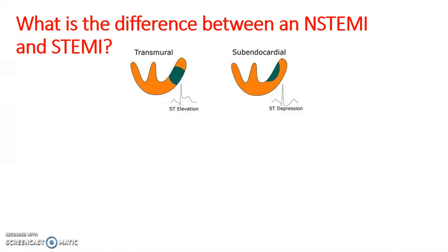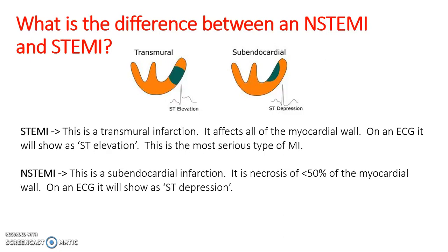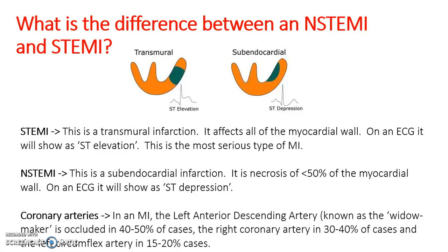What is the difference between an NSTEMI and a STEMI? A STEMI is a transmural infarction — all of the myocardial wall, as you can see on the left, is affected — and on an ECG it will show ST elevation. That is the most serious type of MI. An NSTEMI is a subendocardial infarction, meaning necrosis of less than 50% of the myocardial wall, and that will show as ST depression. The left anterior descending artery is the widow-maker, occluded in 40–50% of cases, the right coronary artery in 30–40%, and the left circumflex artery in 15–20% of cases.